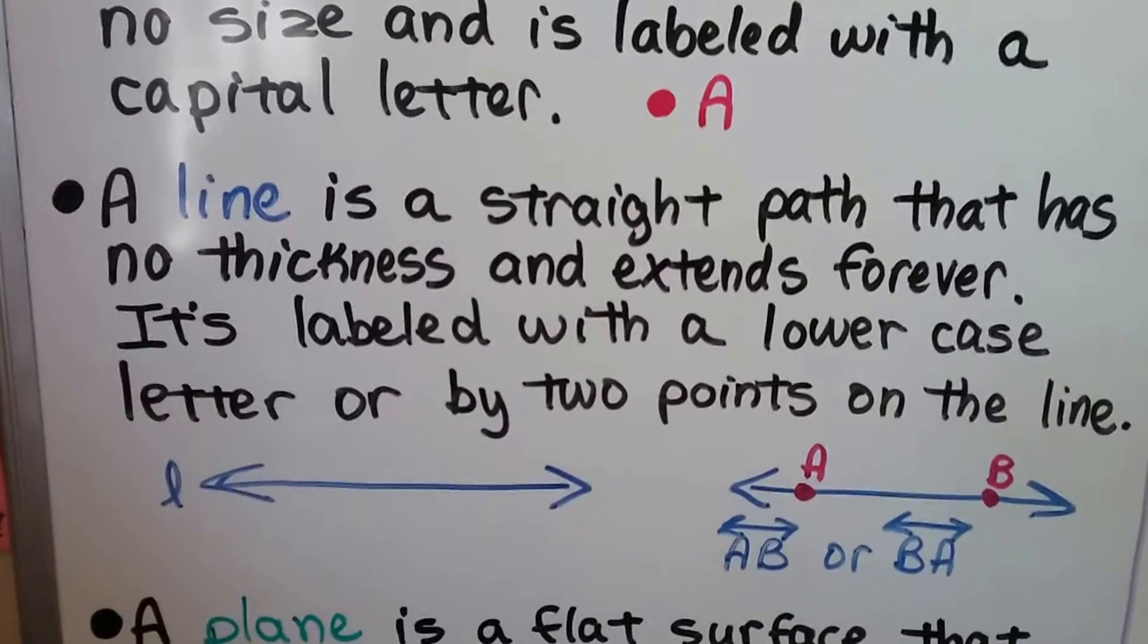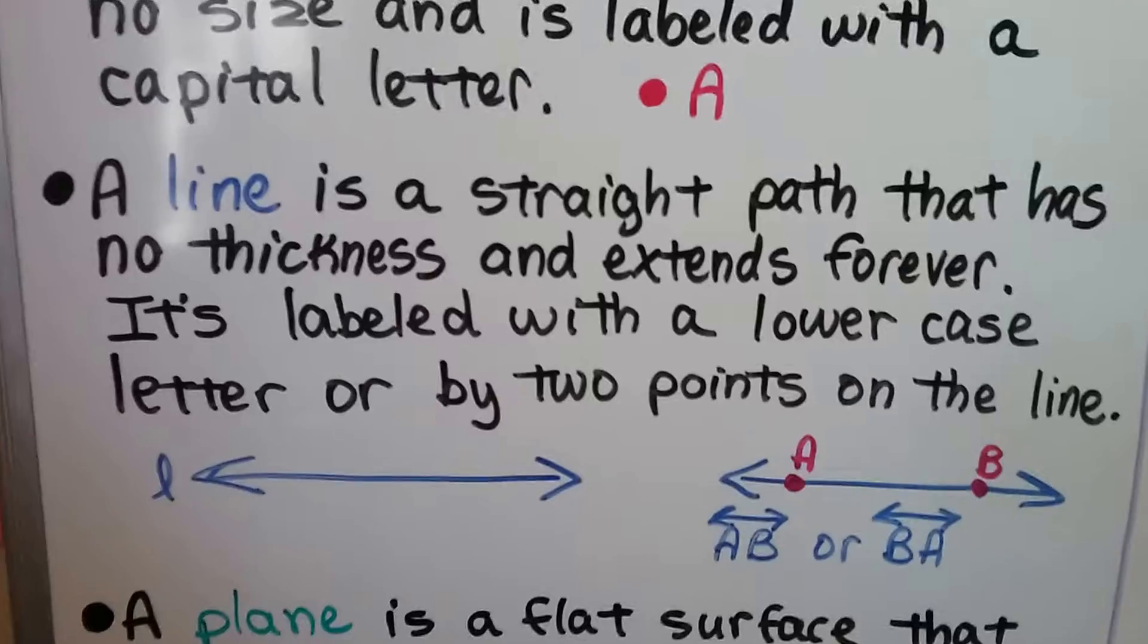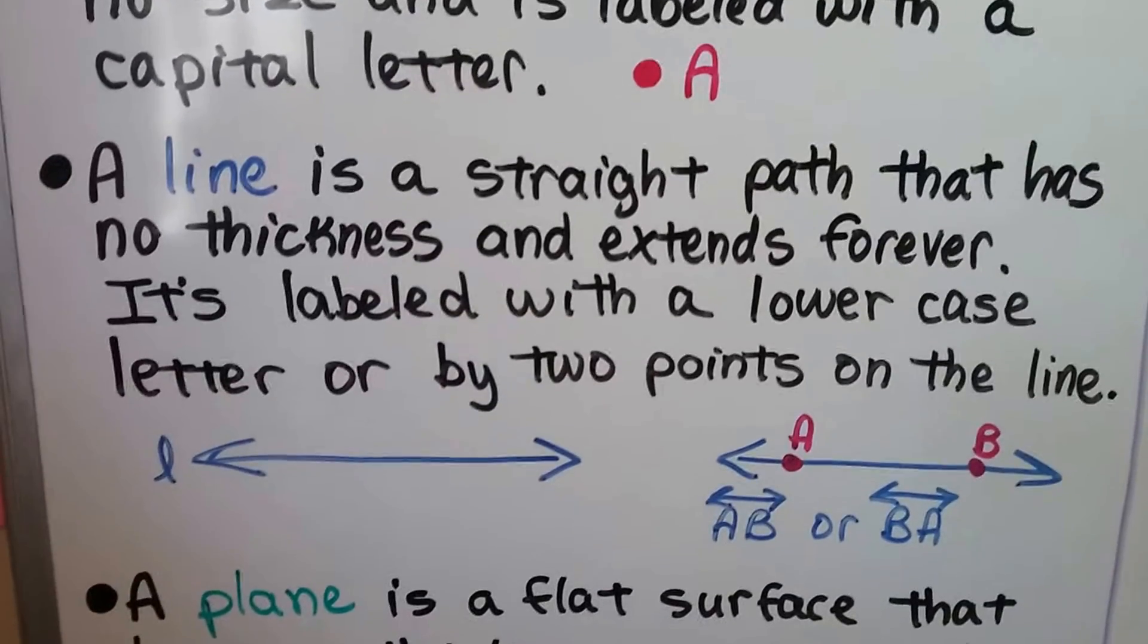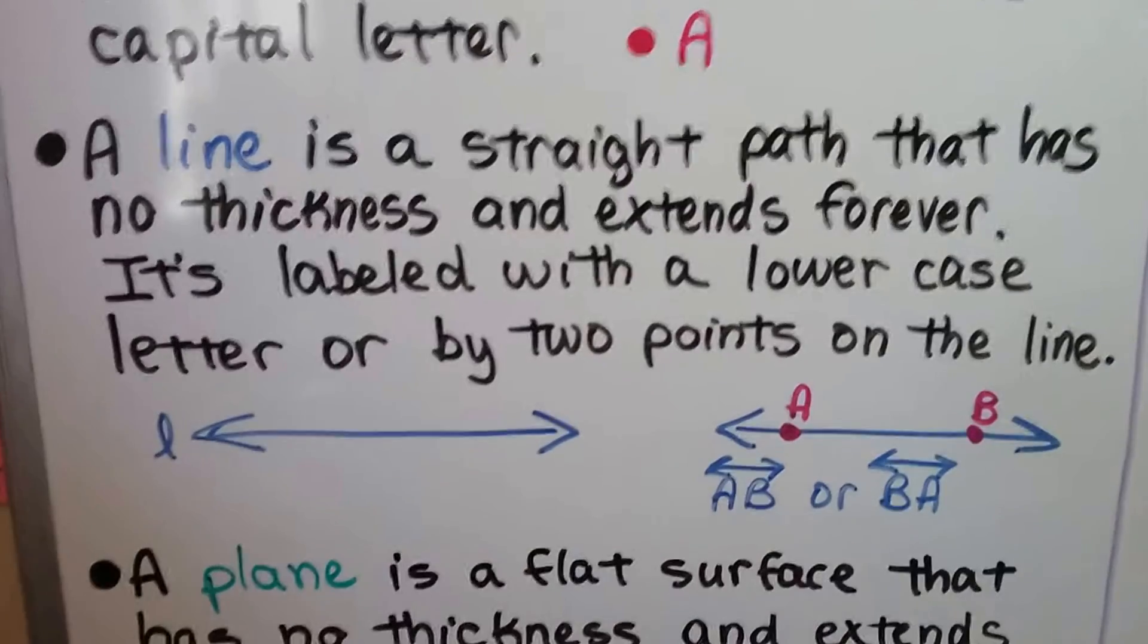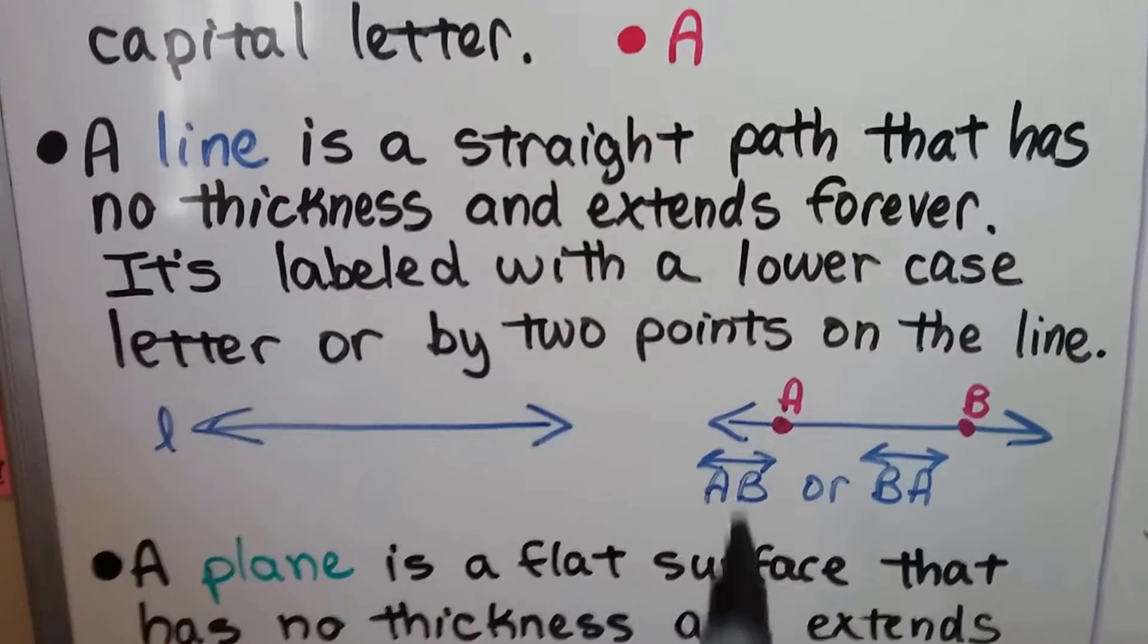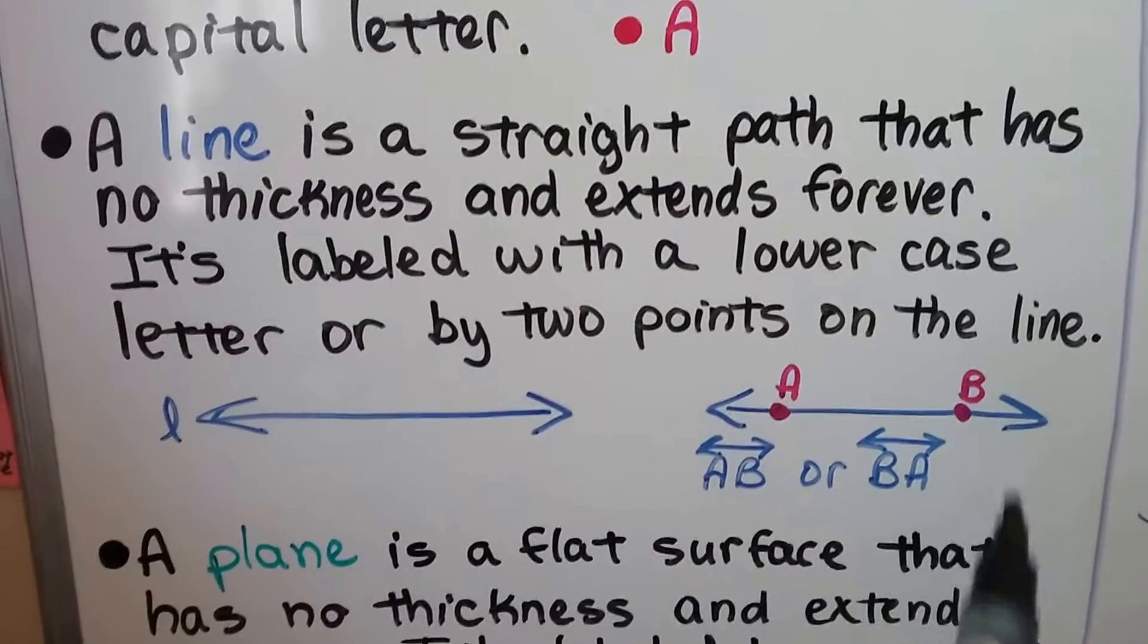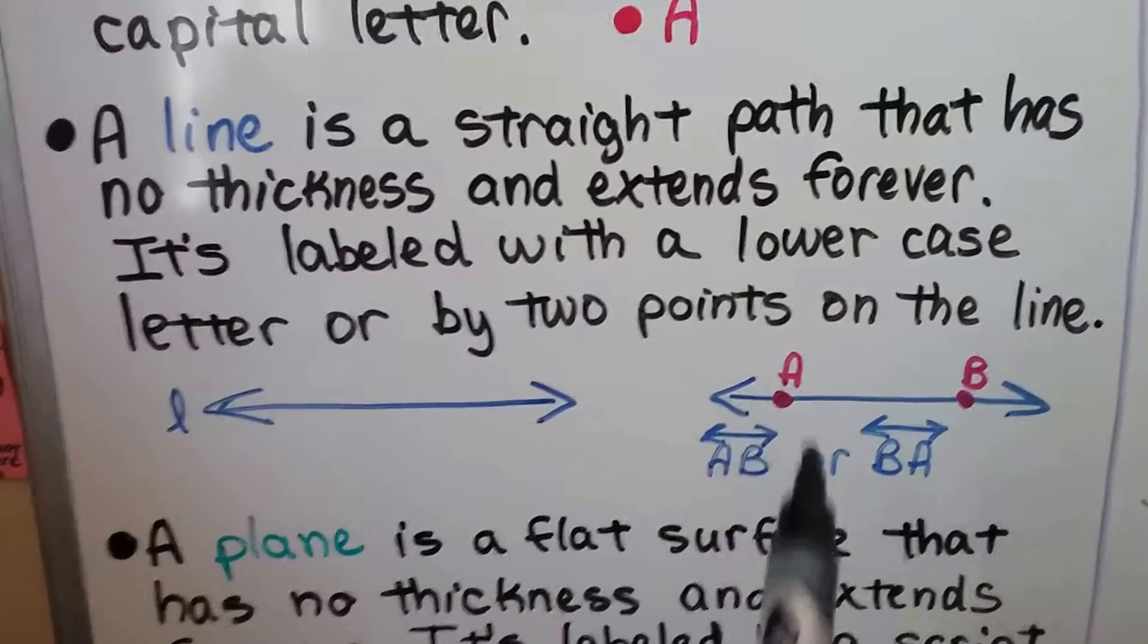A line is a straight path that has no thickness and extends forever. It's labeled with a lowercase letter, like this lowercase l, so this is line L, or by two points on the line. So this would be line AB. We could even say it's line BA. It doesn't matter.